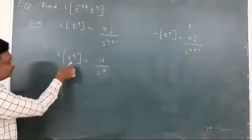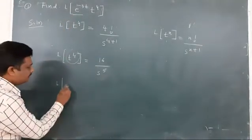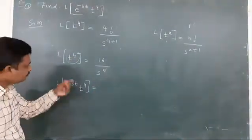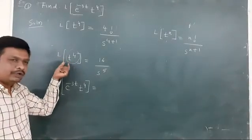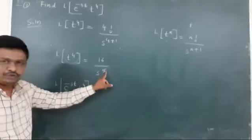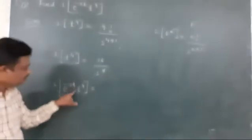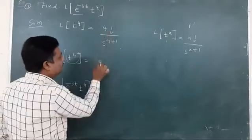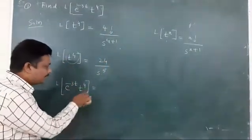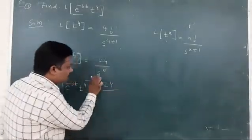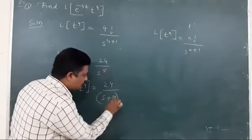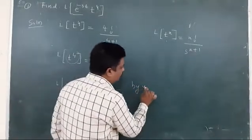So the Laplace transform of t to the power of 4 is 24 upon s raised to 5. Now I will apply the first shifting property. The given function is multiplied by e to the power of minus 3t, so applying the first shifting property, s is replaced by s plus 3, giving 24 upon (s plus 3) to the power of 5.